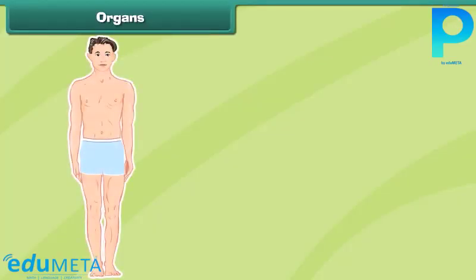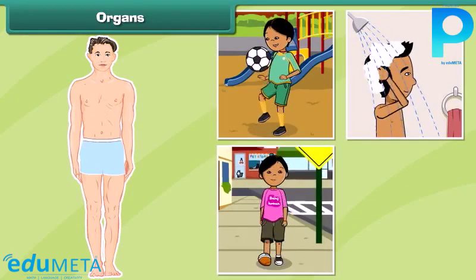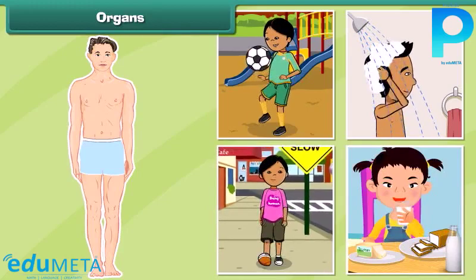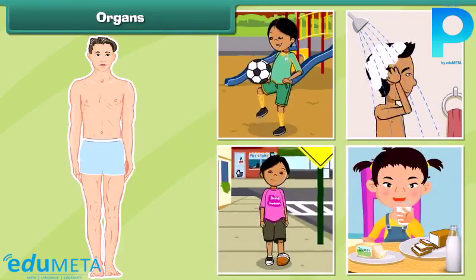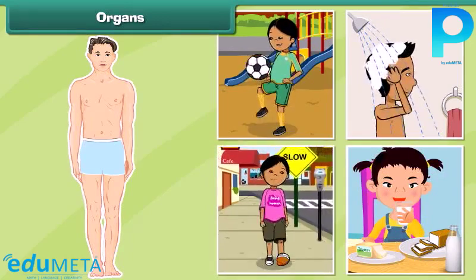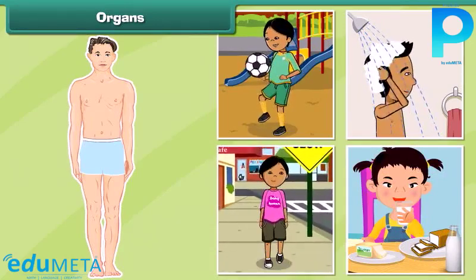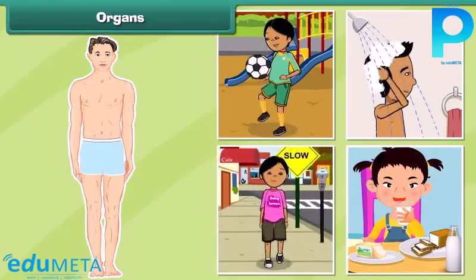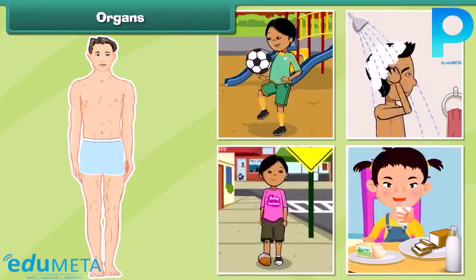The parts of the human body that help the body perform functions like playing, bathing, walking, eating, digesting, and breathing are called organs. On the basis of their location in the human body, organs are classified as internal or external.